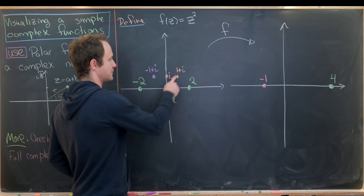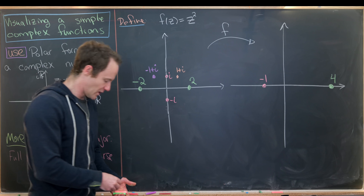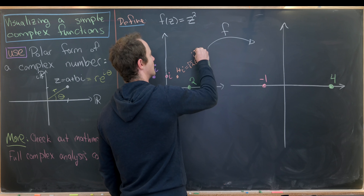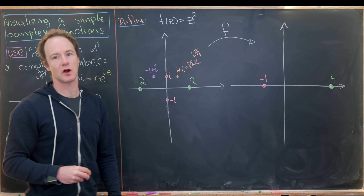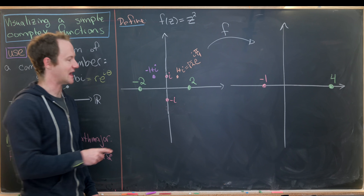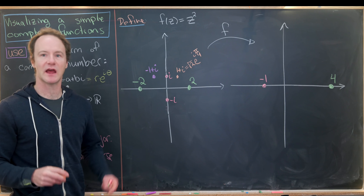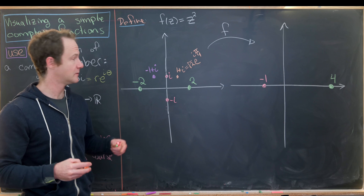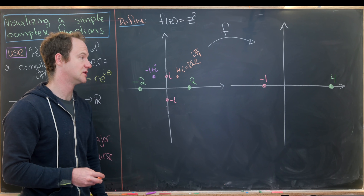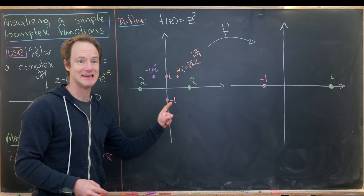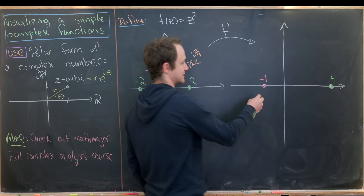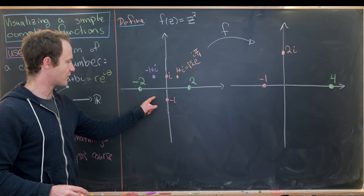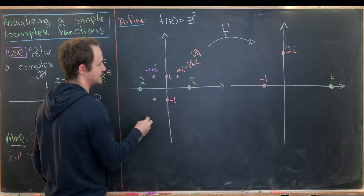Now let's look at 1 + i. Through simple calculation, this is √2·e^(iπ/4). The argument is π/4 since the real and imaginary parts are equal, making a 45-degree angle. Squaring: √2 becomes 2, and e^(iπ/4) becomes e^(iπ/2). But e^(iπ/2) = i, since that's a 90-degree angle from the positive real axis. So 1 + i maps to 2i. And there's another point, -1 - i, that also gets mapped to 2i.